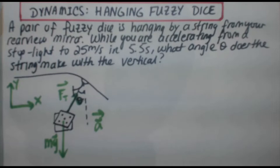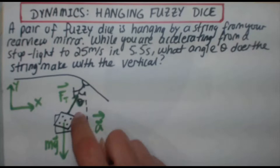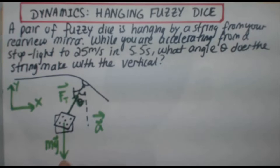So this question already gives you a diagram. You've got your car at the top here, your rearview mirror, your fuzzy dice hanging by a string so there's going to be some tension there. It's hanging at an angle theta from the vertical. You've got your weight, your force of gravity going down because obviously the fuzzy dice have a mass. And we've got our acceleration going forward, and we need to find what this angle is.